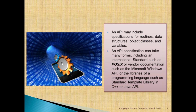An API may include specifications for routines, data structures, object classes, and variables. An API specification can take many forms, including international standards such as POSIX, vendor documentation such as the Microsoft Windows API, or libraries of programming languages such as the Standard Template Library in C++ or the Java API.